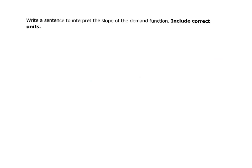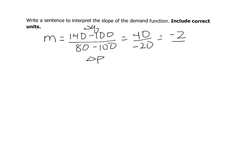In the next step, they ask us to write a sentence to interpret the slope. We took our change in our Q over our change in our P, and we ended up with negative 2, or I'm going to think of this as negative 2 over 1. I'm going to find the units here first.